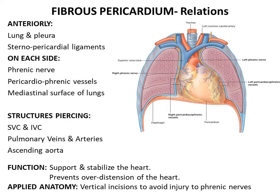The incisions given in the fibrous pericardium are vertical, so as to avoid injuring the phrenic nerves or the accompanying pericardiophrenic vessels.